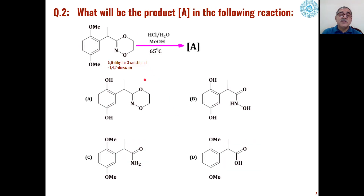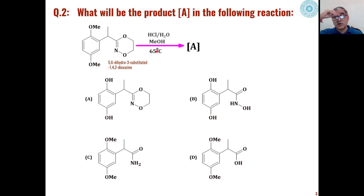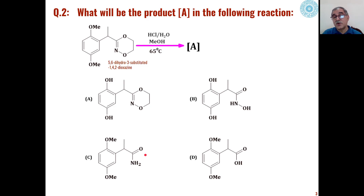The second problem is how substituted 5,6-dihydro-3-substituted-1,4,2-dioxazines, under acid conditions in presence of water — that is, aqueous acid conditions in presence of methanol — can give us different types of products. Out of these four choices, we will see which product will be formed in the coming slides.